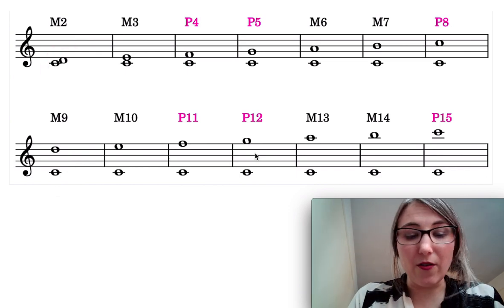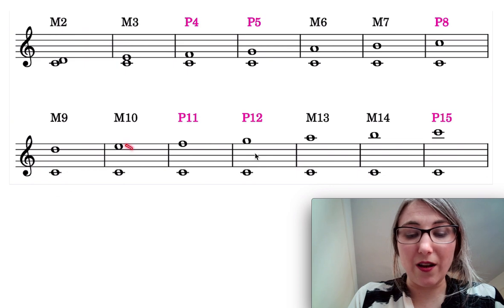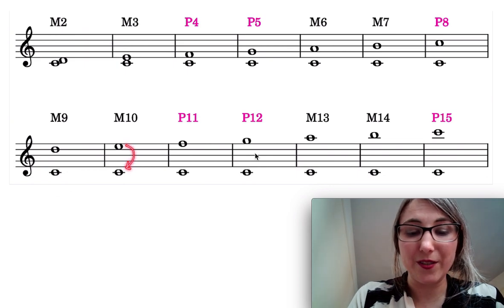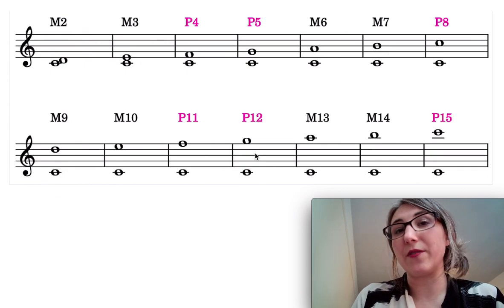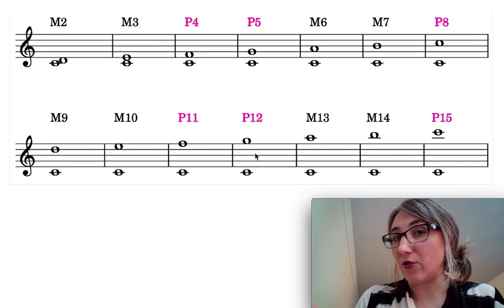We can think of a major ninth as being a major second plus an octave. Same thing here: I take a major tenth and imagine reducing the octave out by moving that E down, so I can think about the major tenth as being a major third plus an octave.